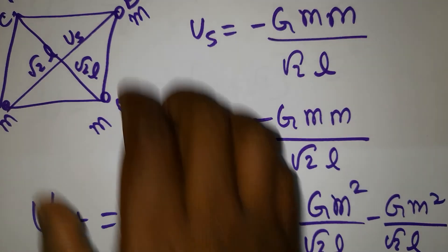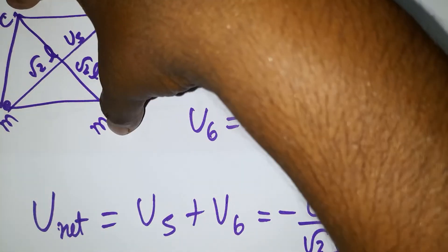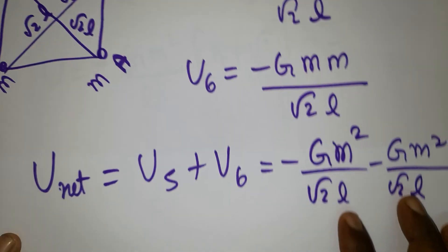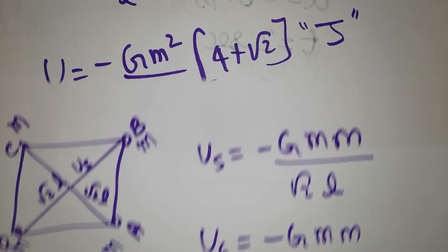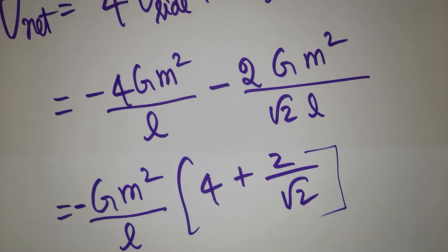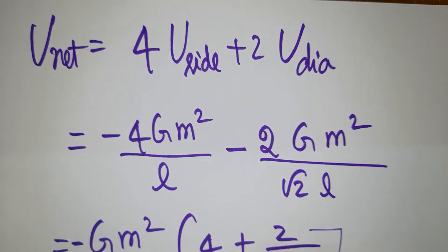I got the diagonal length. This is u5, this is u6. So total energy between these two will have 2 times. Now the total energy is 4 times the sides plus 2 times the diagonal.